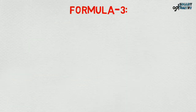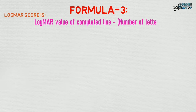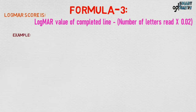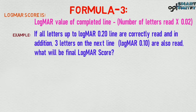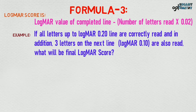Formula 3: logMAR score equals the logMAR value of the completed line, minus the number of letters read multiplied by 0.02. For example, if all letters up to the logMAR 0.20 line are correctly read, and in addition 3 letters on the next line — logMAR 0.10 — are also read, what will be the final logMAR score?